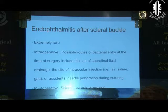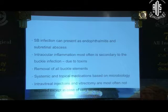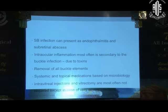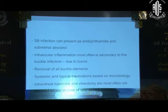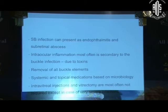Endophthalmitis after scleral buckle is extremely rare. Possible intraoperative routes include the site of subretinal fluid drainage, the site of intraocular injection, or accidental needle perforation during suturing. Postoperatively, the patient could develop scleral necrosis or erosions. As seen in this case, buckle infection can present as endophthalmitis and subretinal abscess. In most cases, intraocular infection is secondary to the buckle infection due to toxins and not direct infection. Most cases are treated by removal of all buckle elements and appropriate antibiotics; intravitreal injections and vitrectomy are most often not required and would likely only transfer the external infection into the eye.